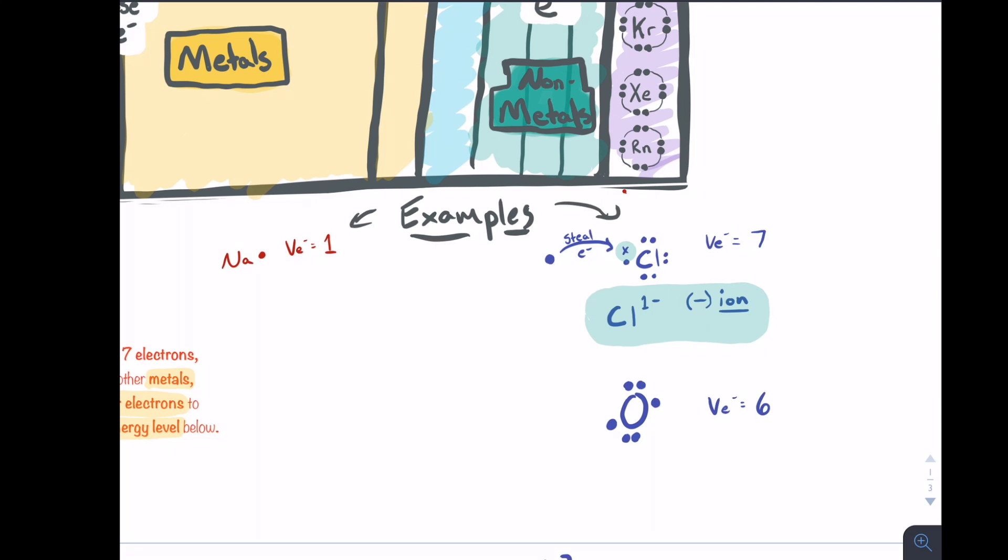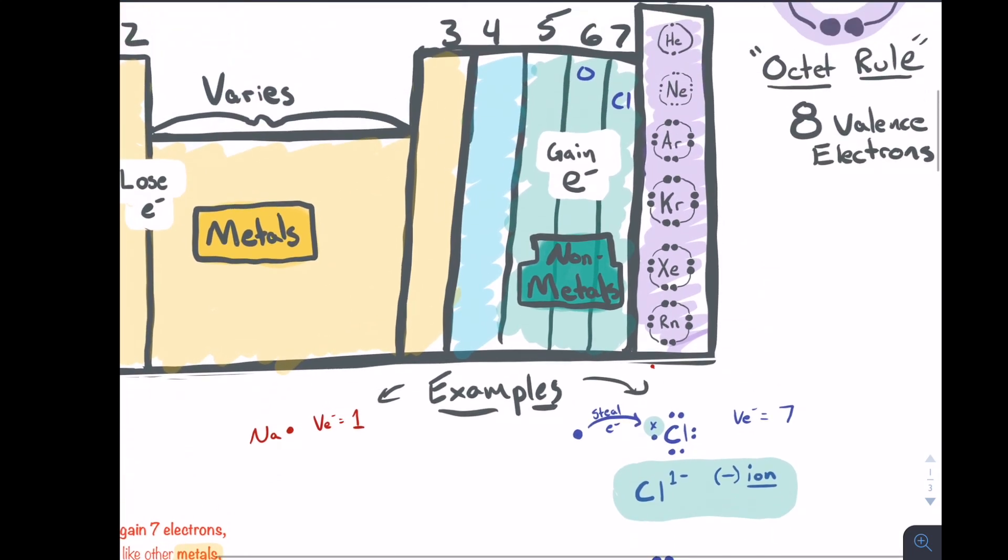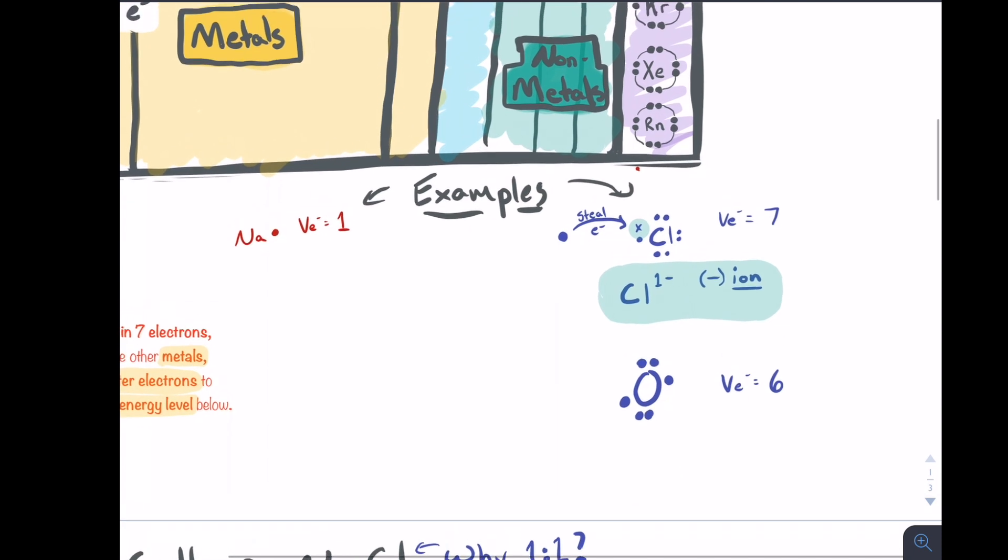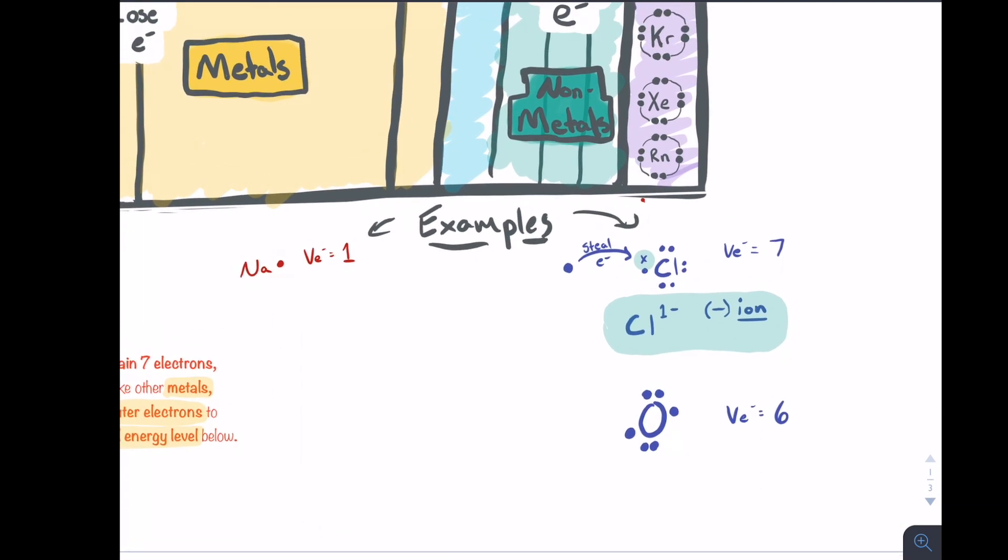Take a look here at oxygen. Oxygen's in the group next to it, number six there, so it's going to have six valence electrons. We draw the dot structure and this time when we take a look, we notice that oxygen would need to get two electrons from somewhere else to complete that outer energy level and to have that octet fill up. That's exactly what oxygen will tend to do from time to time. It will steal two extra electrons from somewhere else, one that goes in each of those spots. By doing this, since it gains two negative charges, it's a negative ion but this time it is a negative two charge up on the top.